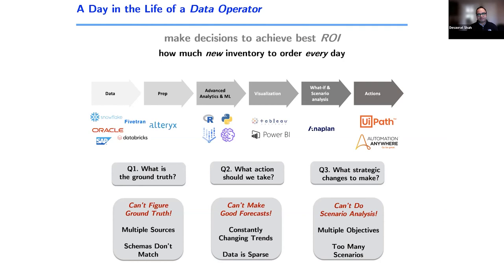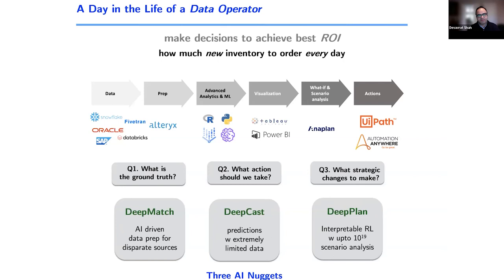You need to make good predictions with sparse data. Scenario analysis means running many simulations of reinforcement learning to make decisions, with multiple objectives — not one. You want to think about a new class of reinforcement learning questions. Doing all of these three things end-to-end is what got me excited. At MIT, with my former students and collaborators, we developed three AI nuggets: DeepMatch, DeepCast, and DeepPlan.